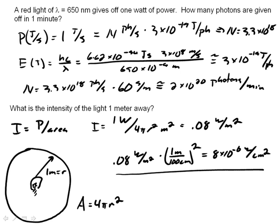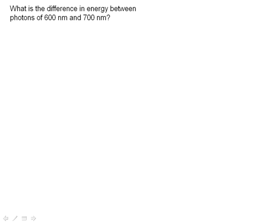Let's do one more problem and then call it a day. What's the difference in energy between photons of 600 nanometers and 700 nanometers? Well, you think this might be an easy problem because in this case, delta lambda is equal to 100 nanometers.